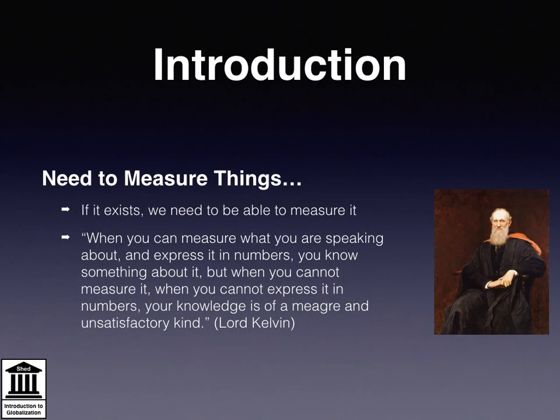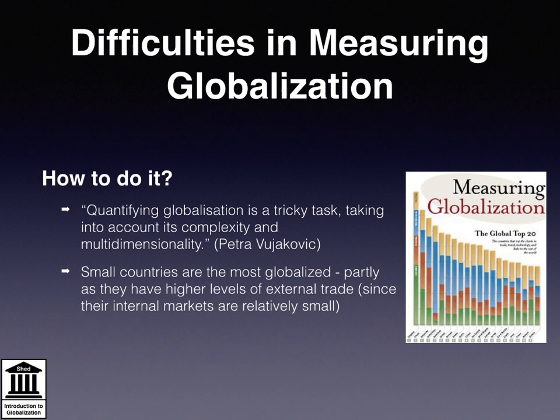If we talk about something and argue that it exists, then modern political economy dictates that we have to be able to measure it in some meaningful way. This notion echoes the British scientist Lord Kelvin, who argued that when you can measure what you are speaking about and express it in numbers, you know something about it. But when you cannot measure it, when you cannot express it in numbers, your knowledge is of a meagre and unsatisfactory kind. As argued by Petra Vujakovic, quantifying globalisation is a tricky task, taking into account its complexity and multidimensionality.